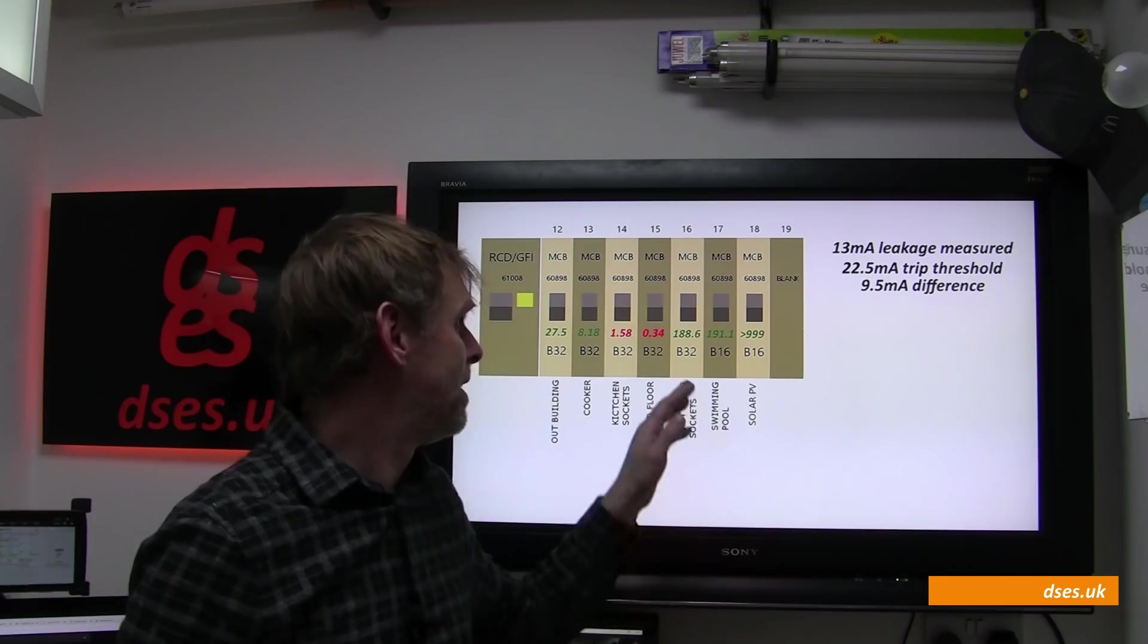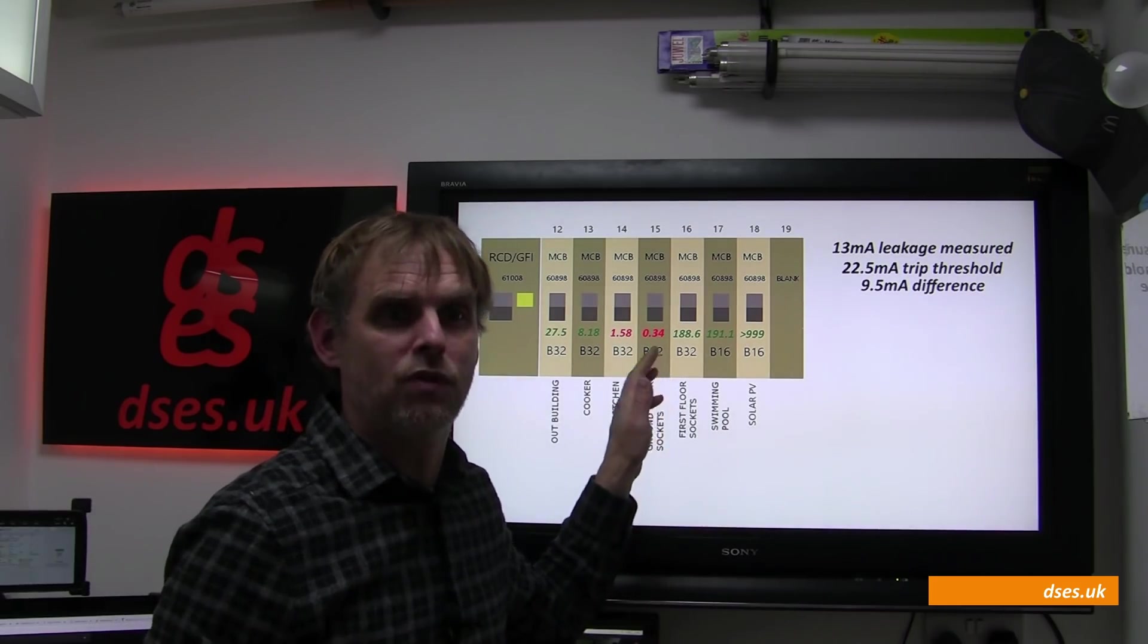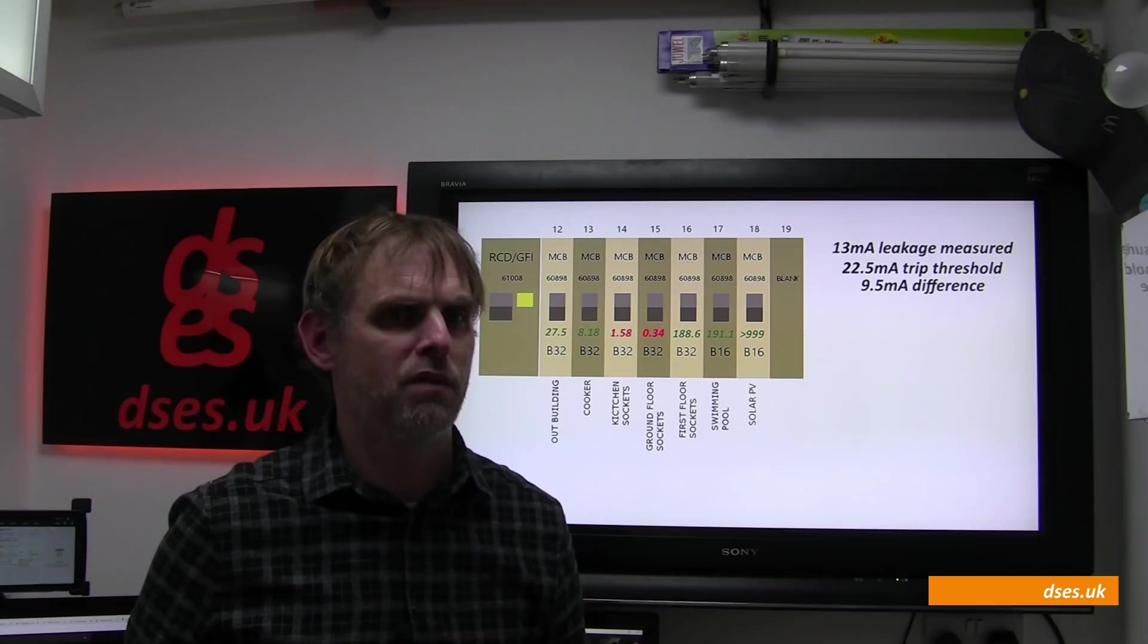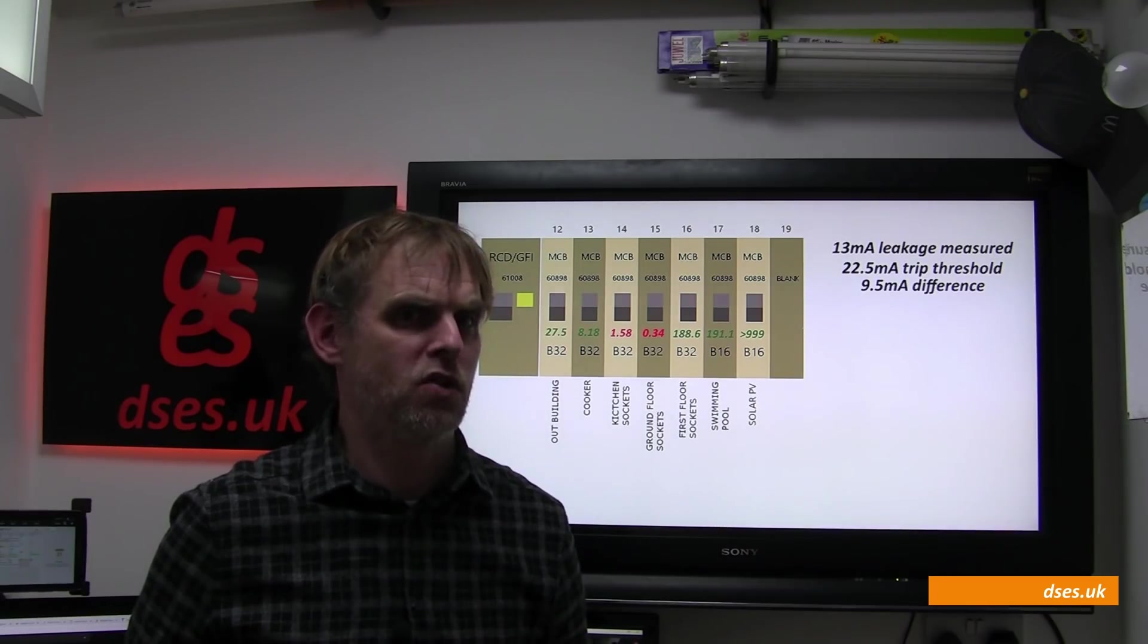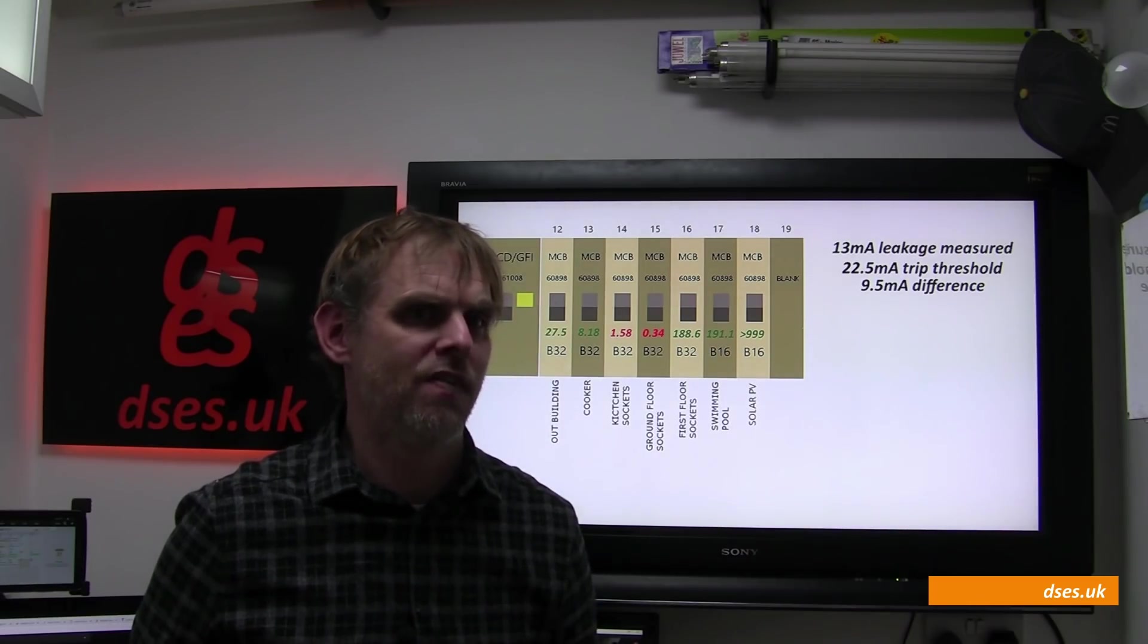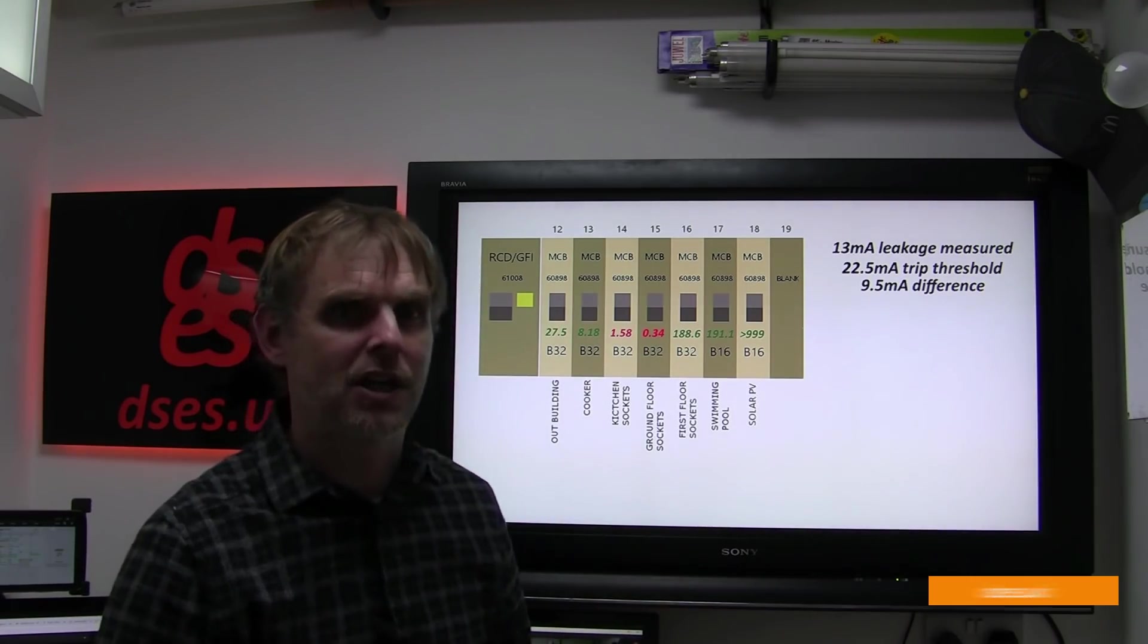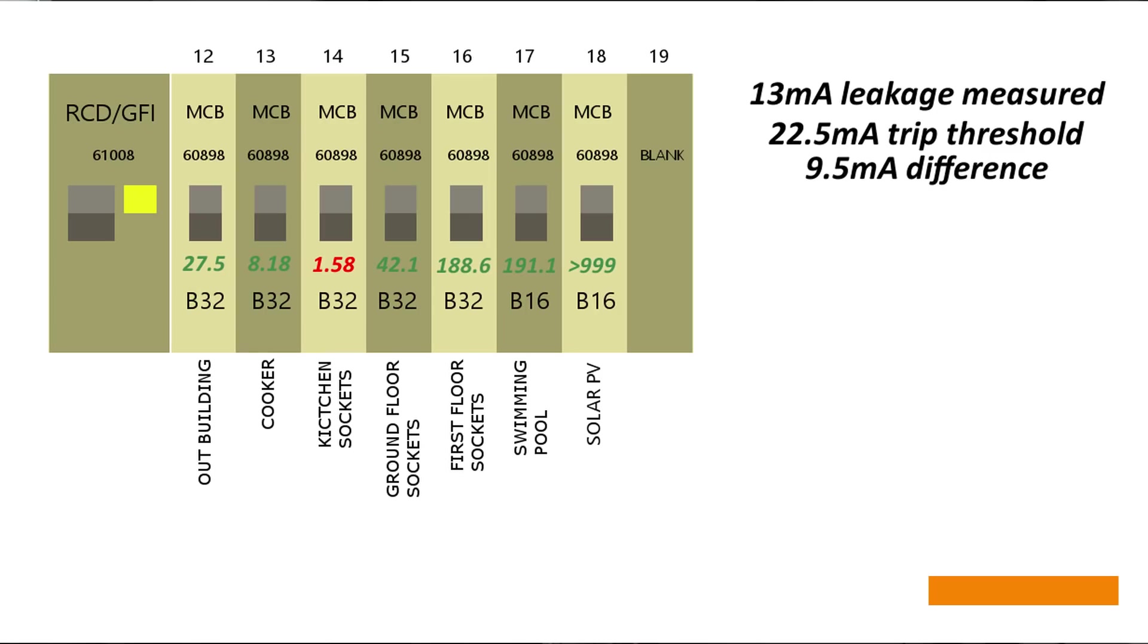As it turns out, the reason circuit 15 was reading so low is because it had one of these surge protected extension strips plugged in, so when we zap 500 volts down line and neutral, the varistor in there kicks in and provides a low resistance path to squash what it sees as a surge. That 0.34 number is therefore a red herring, and that circuit actually tests out to 42.1 megaohm with that surge protected strip removed.